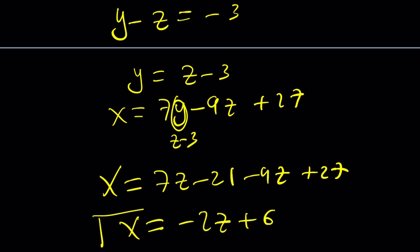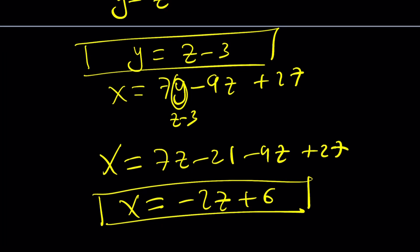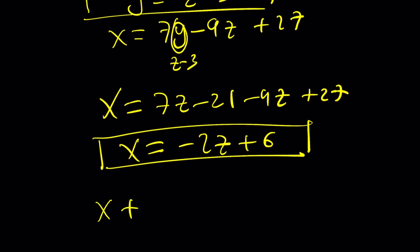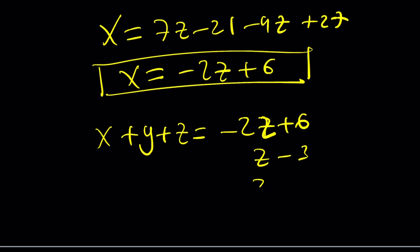So here's the thing. I got x in terms of z. I got y in terms of z. And I'm supposed to find x plus y plus z. So x is going to be negative 2z plus 6. This is x. y is z minus 3. And z is just z. If I add these up, again, I'm getting 3. But is this just luck or is this method always going to work?